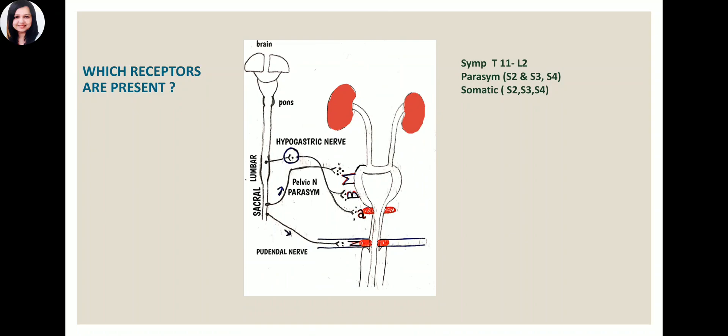The urinary bladder and urethra are controlled by the central nervous system — the brain, brainstem, and spinal cord. The pons has a center called the Pontine Micturition Center (PMC). In the spinal cord, the sacral region (S2, S3, S4) has the sacral micturition center. The thoracolumbar region provides sympathetic fibers that inhibit the micturition process and help in filling of the bladder.